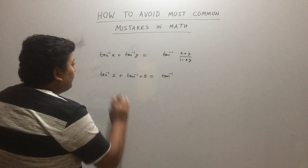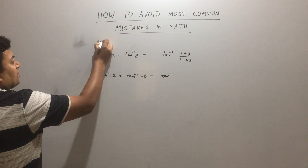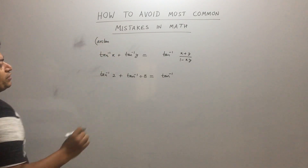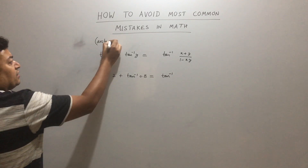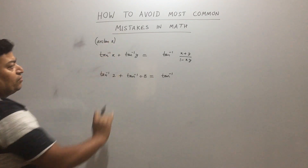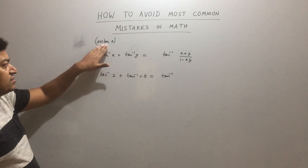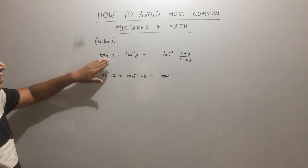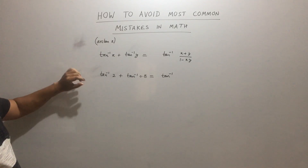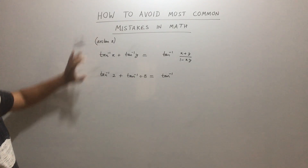Tan⁻¹ is also written as atan. I want to clarify that atan(x) is just another symbol for tan⁻¹(x). They are the same thing — atan(x) and tan⁻¹(x) mean the same thing, and atan is becoming more popular now.